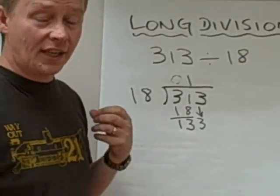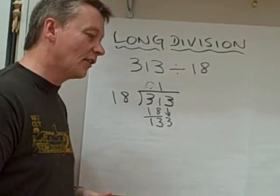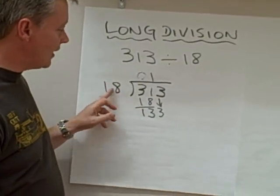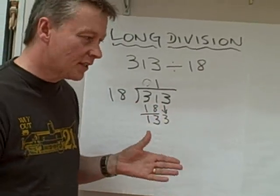Well, the thing I need to know about that is can I guess the answer or estimate the answer first. And I need to know a little bit of multiplication. And what I think is that 18 will go into 133 6 or 7 or 8 times.